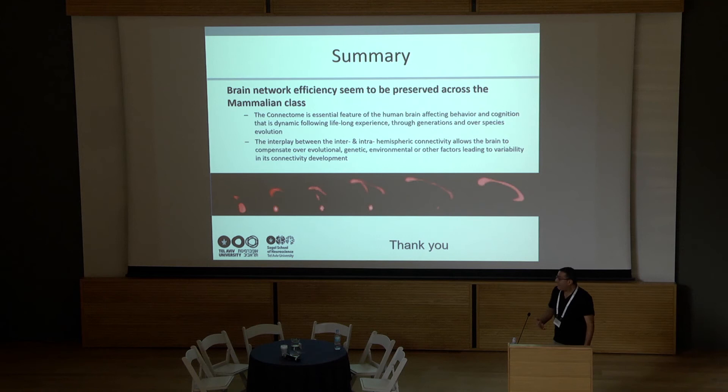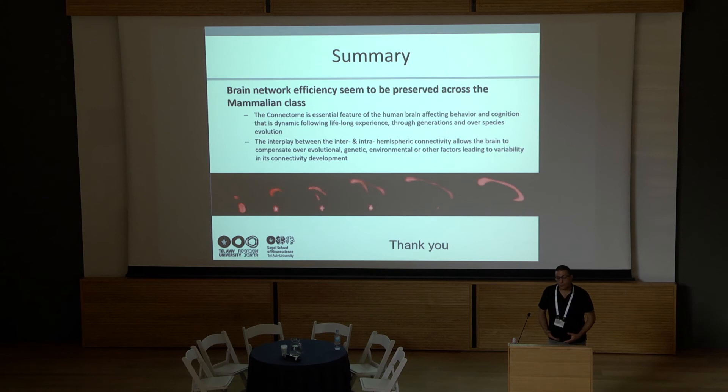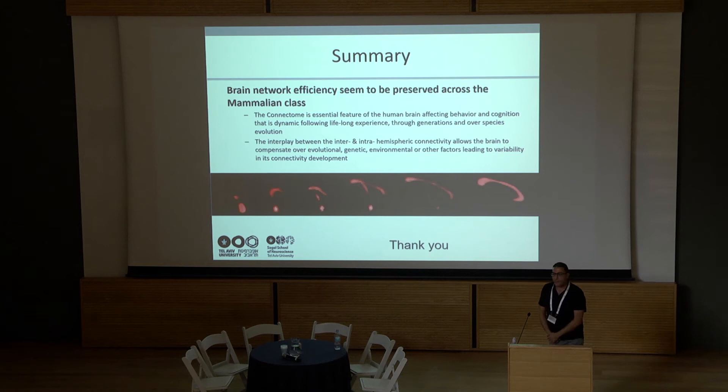To summarize: the main take-home message is that brain network efficiency seems to be preserved across the mammalian class. This rich database is the basis for exploring what characteristics of the connectome drive the different behaviors and functions across animals — from the kangaroo to the human brain, looking at anterior commissure and corpus callosum through evolution. Thank you.